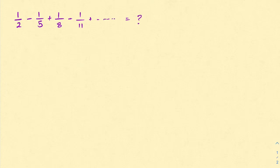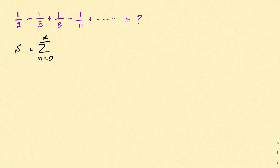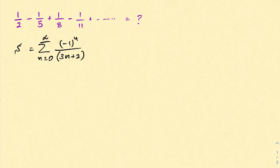Hello everyone, welcome to the Mathematics Mi channel. Today we have to evaluate another interesting infinite series: 1 over 2 minus 1 over 5 plus 1 over 8 minus 1 over 11, and so on. First, I am going to take our series equal to S, and we can represent this series using sigma notation: sum of n equals 0 to infinity of minus 1 to the n over 3n plus 2.